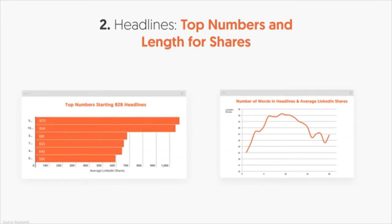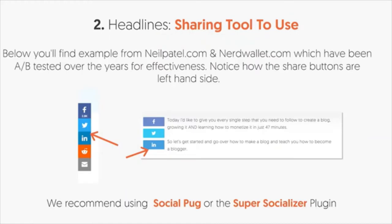If you want to maximize shares on your blog posts or resource pages, use plugins like Social Pug or Super Socializer. It's a great way to add social sharing icons to your site like I have on the Neil Patel website. It does help generate a little bit more social shares — it doesn't give you a ton more, but every little bit adds up.